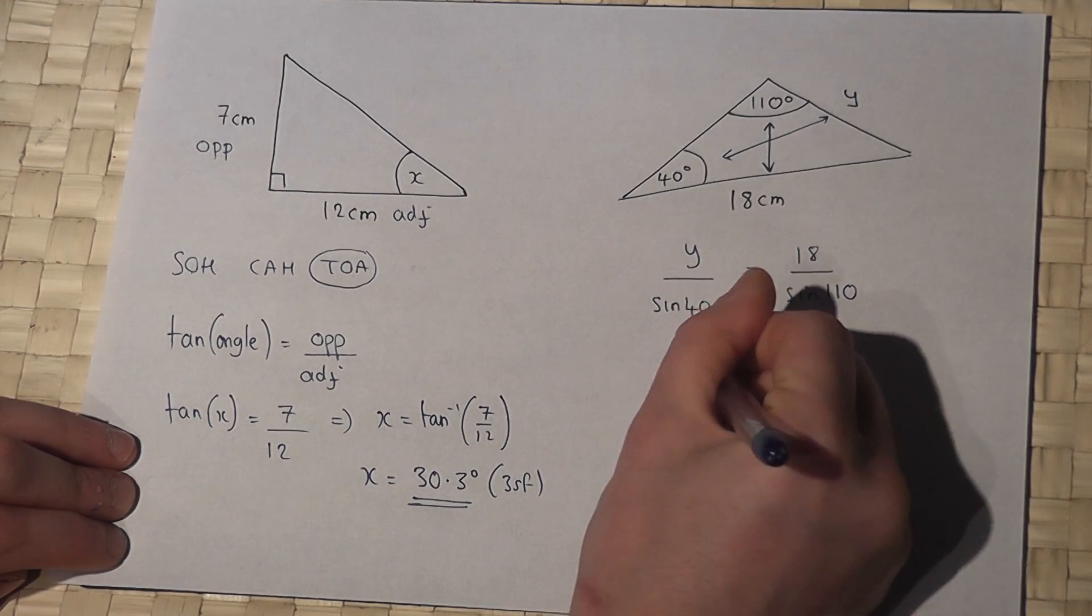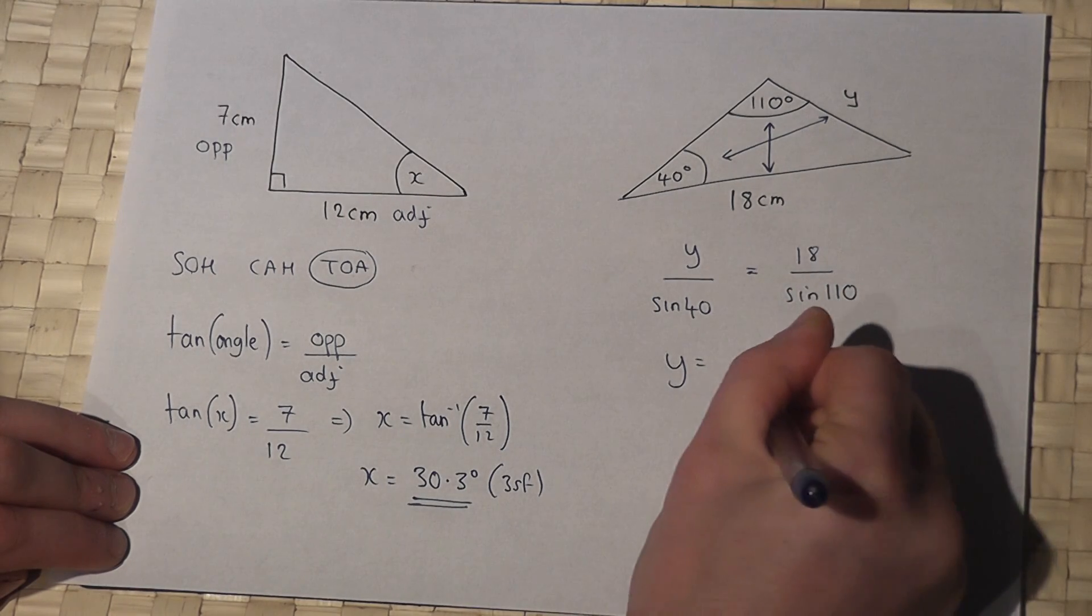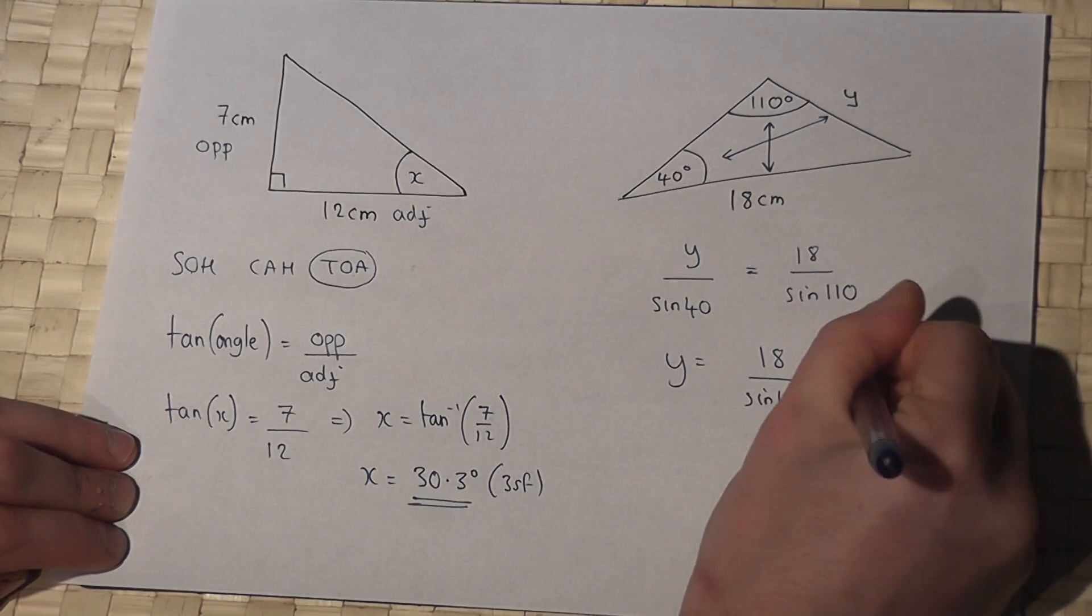So to find y, I have to times by sine of 40. So 18 over sine of 110 times by sine of 40.